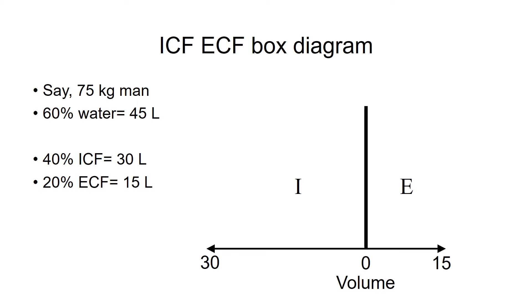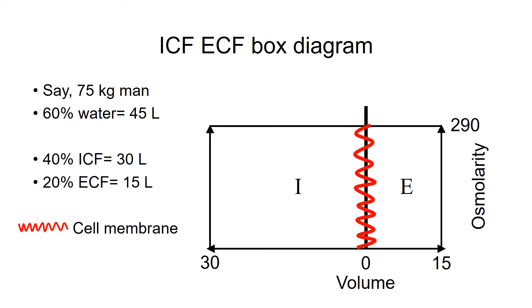Then we go vertically to represent the osmolarity. For a normal person that would be 290, both extracellular and intracellular. Now we have a box diagram. The line between intra versus extra would be the cell membrane that is permeable to water.